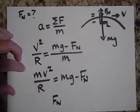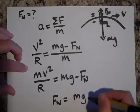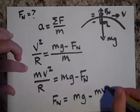So apparently Fn, just for this situation, is going to be Mg minus Mv squared over R.